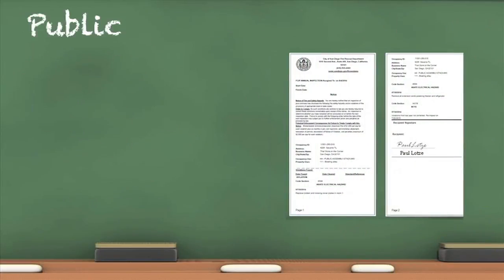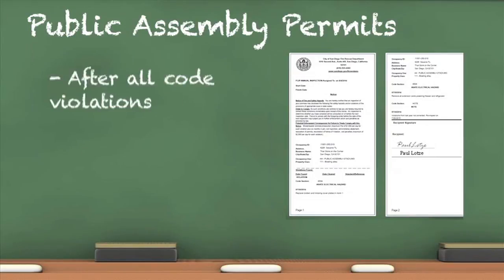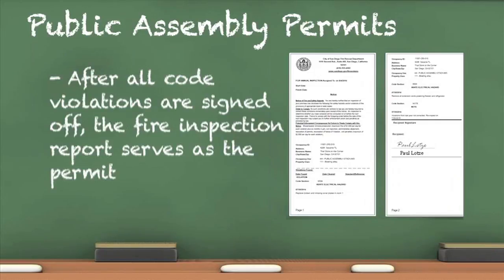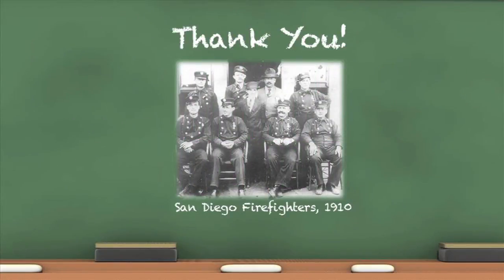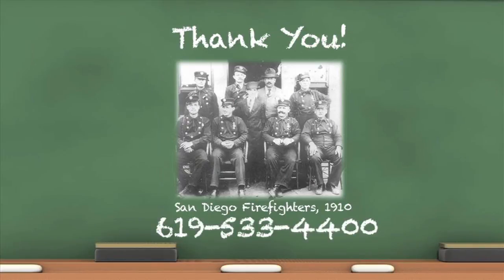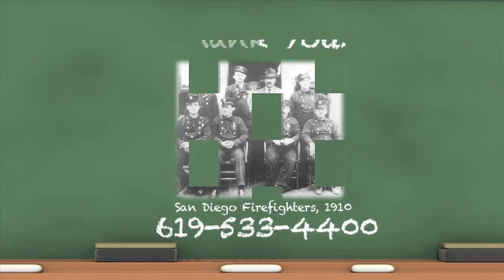According to fire code, a permit is required to operate a public assembly. Once the inspection has been finalized and all violations, if any, are corrected, the fire inspection report is your permit from the fire department to operate a public assembly. This applies to any other operational permits listed on the inspection report. Thank you for your time and attention — your diligence will help keep everyone safe while in your occupancy. Contact the Fire Prevention Bureau at 619-533-4400 with any questions.